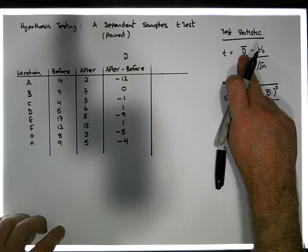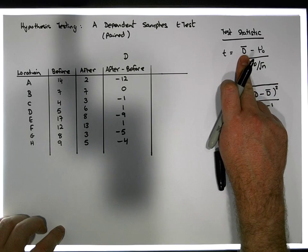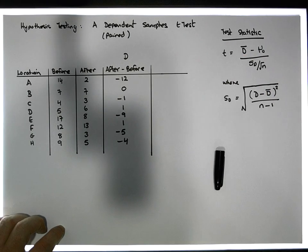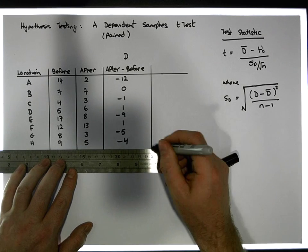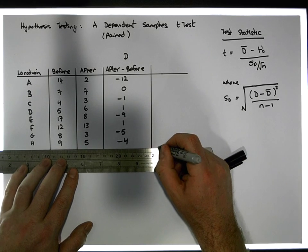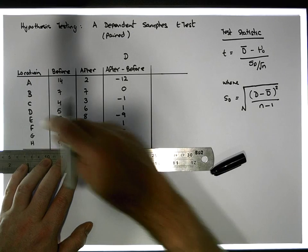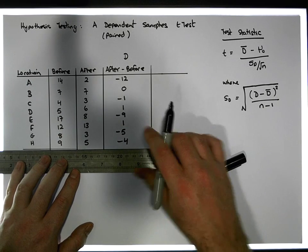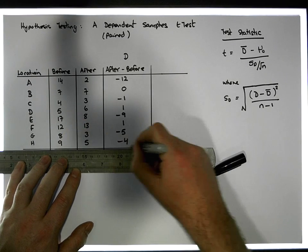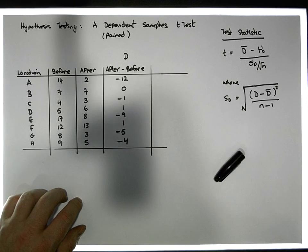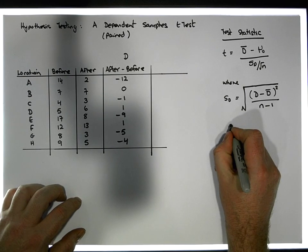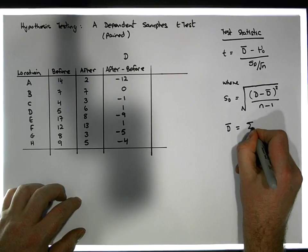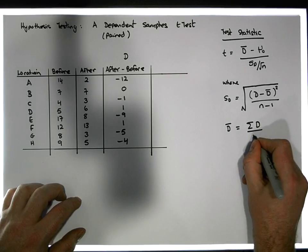What we need to calculate is the average distance, or the average difference. To calculate an average is quite simple: all we have to do is sum up the values and divide by how many there are. In this case, d-bar is simply equal to the sum of the differences divided by our sample size.